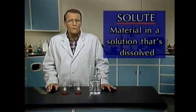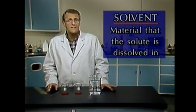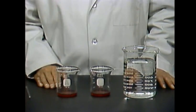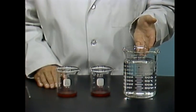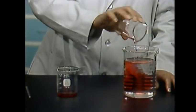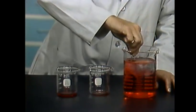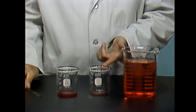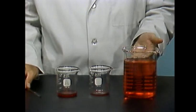There are two terms associated with solutions that help describe what they're made of: solute and solvent. The solute is the material in a solution that's dissolved. The solvent is the material that the solute is dissolved in. For example, we're going to make a solution of dye and water. The dye is the solute. The water will be the solvent. Let's assume this beaker contains 1,000 grams of water. I'll add 10 grams of dye and stir. The solute, which is the dye, is dispersed evenly throughout the solvent, the water — so we have a solution.